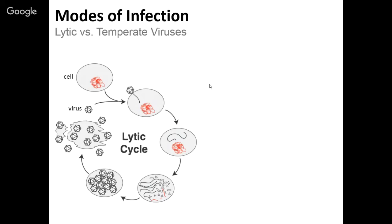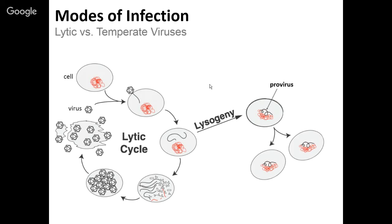But viruses do other things. There's a state known as lysogeny, where the viral genome gets inside of a cell, and instead of making copies of itself and killing the cell, it simply becomes part of the cell. Its genome merges with the genome of the cell, creating essentially a genetically new, different kind of cell. We call that viral genome inside the host genome a provirus. This cell can continue on, grow, divide, replicate, and the viral genome just gets carried along.